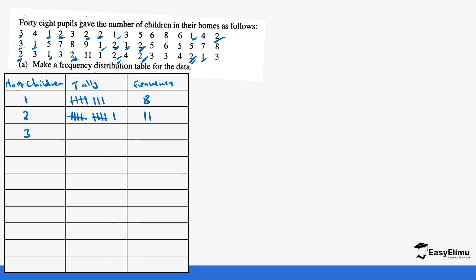Those who had three children: counting gives us eight, so the frequency is eight. Those who had four children: counting gives us four, so the frequency is four. Those who had five children: counting gives us five, so the frequency is five. Those who had six children: counting gives us two, so the frequency is two.